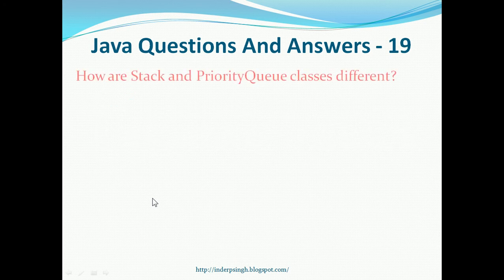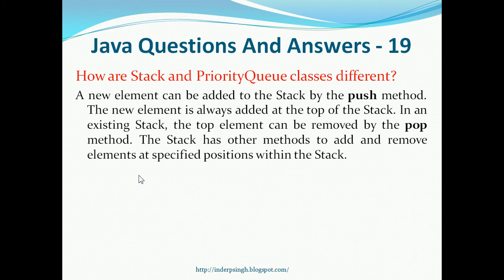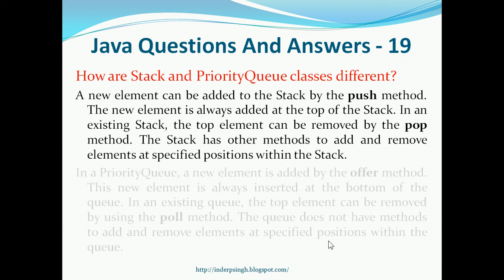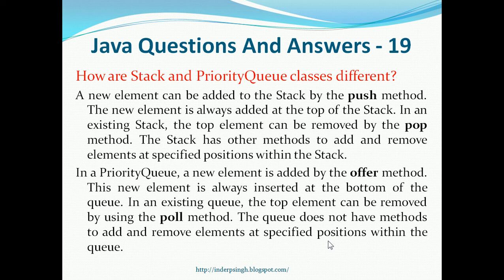Question 19. How are stack and priority queue classes different? First, the stack: a new element can be added to the stack by the push method, and the new element is always added at the top of the stack. In an existing stack, the top element can be removed by the pop method. The stack class also has other methods to add and remove elements at specified positions within the stack. In a priority queue, a new element is added by the offer method and is always inserted at the bottom of the queue. In an existing queue, the top element can be removed by the poll method. The queue does not have methods to add and remove elements at specified positions within the queue.